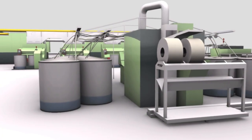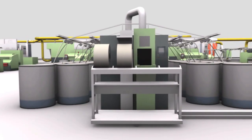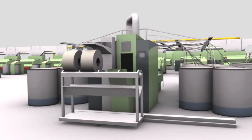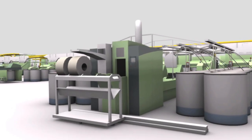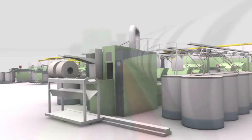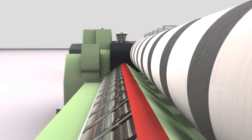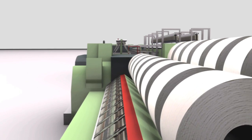The preparation for the combing machine is performed by the sliver doubling machine. Up to 28 draw frame slivers are processed into a wide lap. Eight of these laps are transported to the comber for combing.